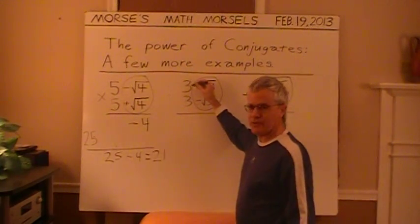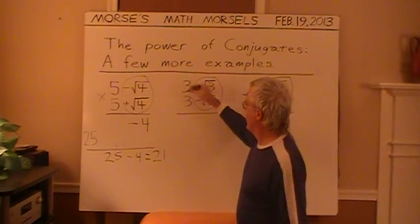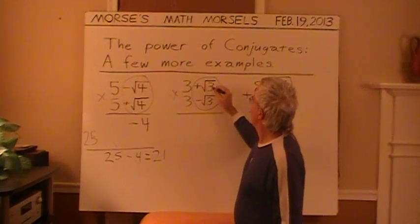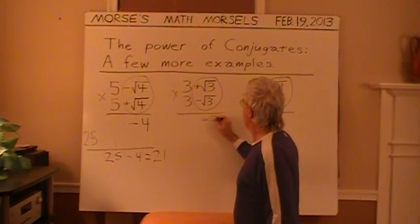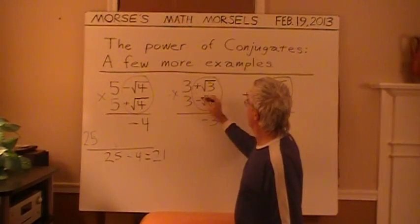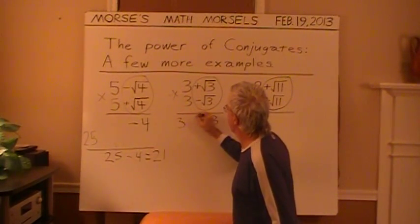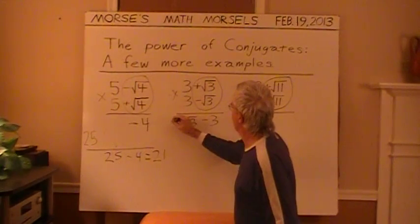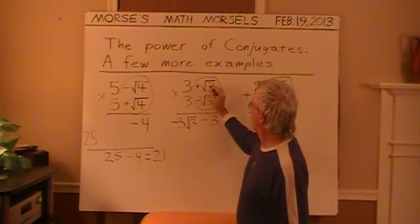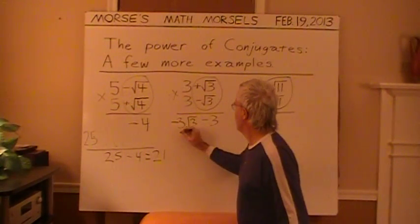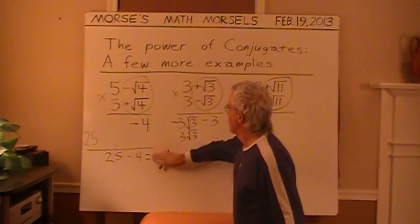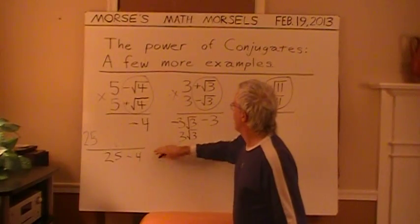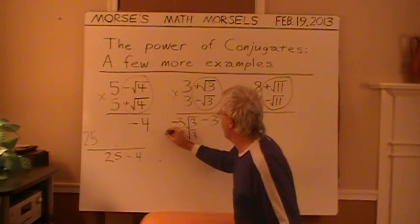Well, the same kind of situation with this conjugate pair being multiplied. Square root of 3 times negative square root of 3, that's going to yield a minus 3. Negative square root of 3 times 3 is just 3 times square root of 3 with the minus sign in front. This 3 times this square root of 3, 3 times square root of 3, that's positive. And then finally, just to make room for that last quantity, 3 times 3, 9.